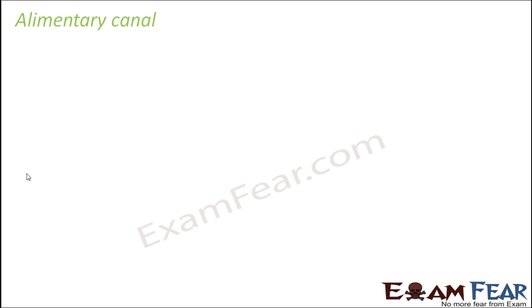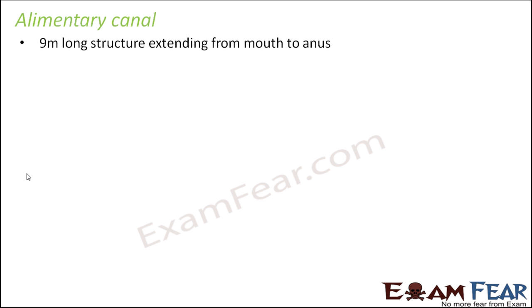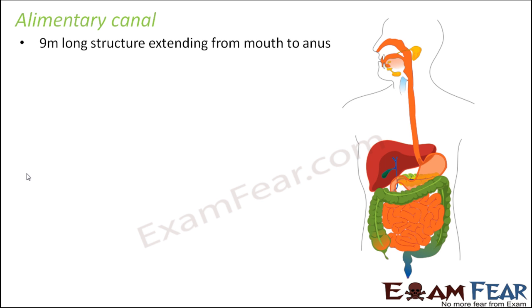The entire process happens through many organs that perform specific functions. The alimentary canal is a nine-meter-long structure extending from mouth to anus. The mouth is the place through which intake of food takes place. Basically, the mouth is like a gate or door through which entry is allowed.